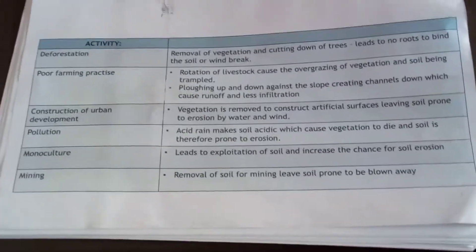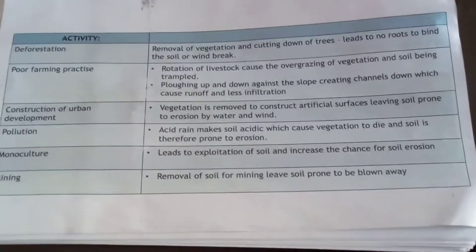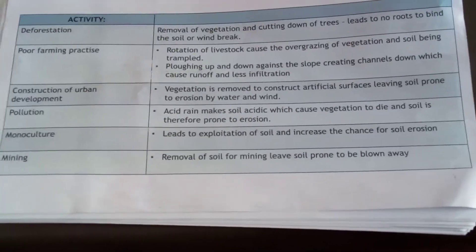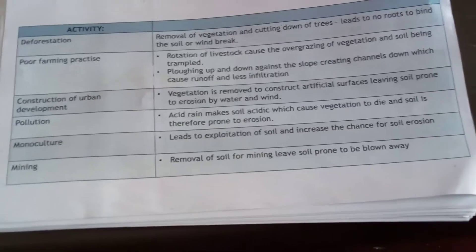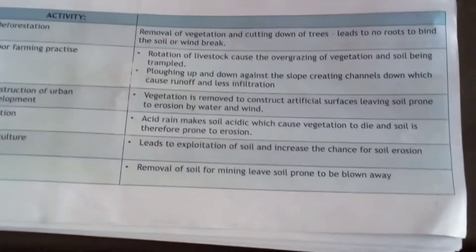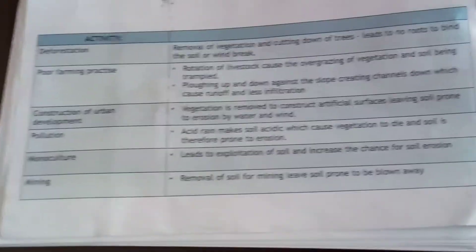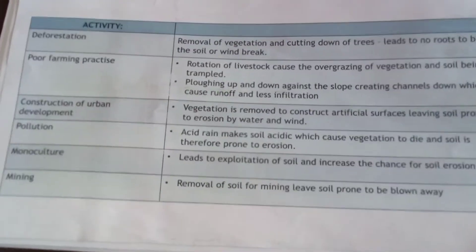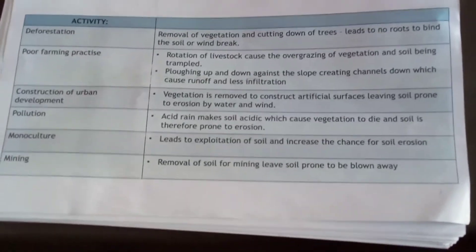Farming practices like overgrazing can cause the removal of grass cover, leaving the land bare and causing soil erosion whereby soil can be washed away by wind and water. Plowing down the slope also creates channels which cause runoff from one point to another down the slope.